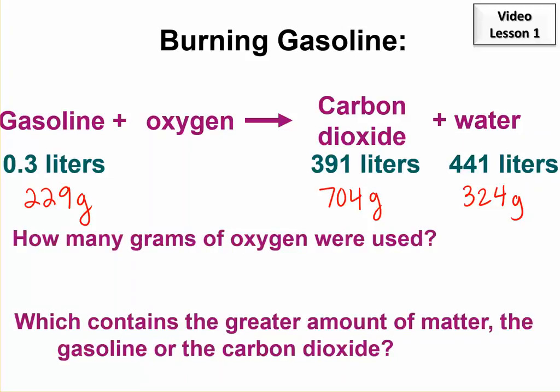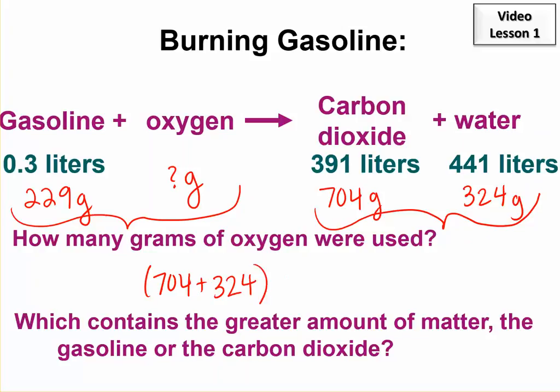So the first question is, I want to know how many grams of oxygen were used. And this is where I use the law of conservation of mass—that no matter is destroyed or created. So the mass has to be the same. In other words, the total mass here has to be the same as the total mass before the reaction occurred. So I could add up the masses of the products and then subtract the reactant that we know, and I will get the mass that must be oxygen.